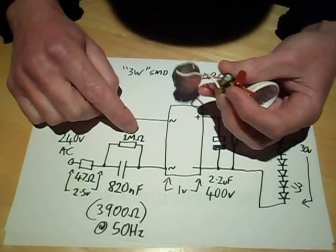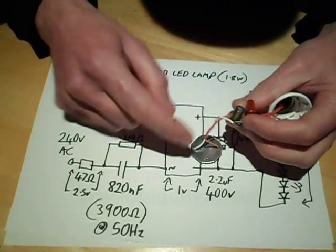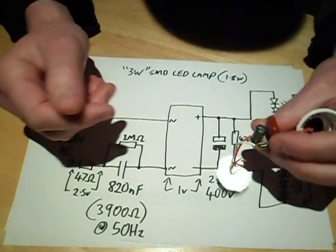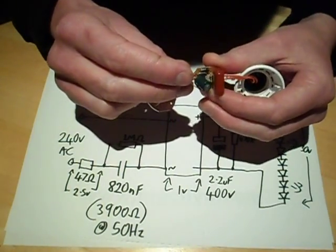With a 1 megohm discharge resistor across it. It goes through a bridge rectifier, a discrete bridge rectifier, just standard 1N4007 style diodes.